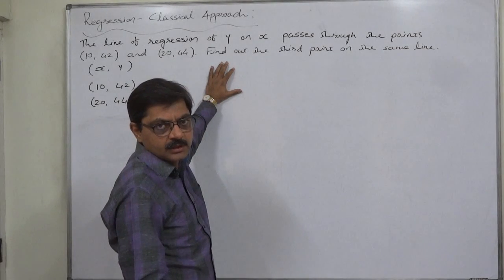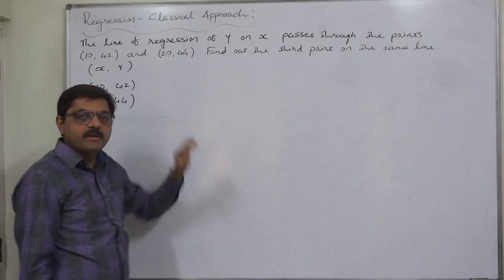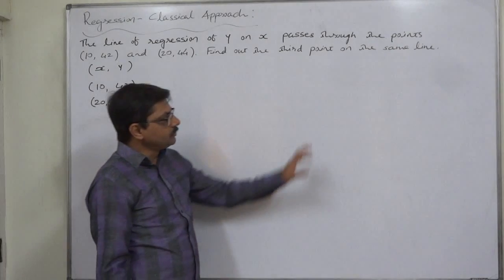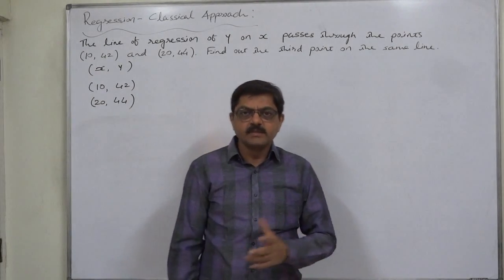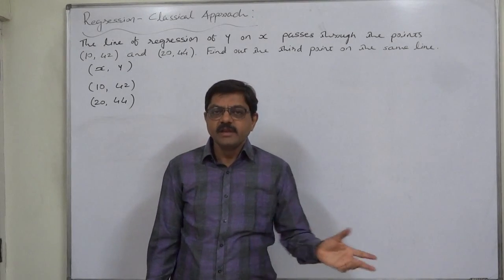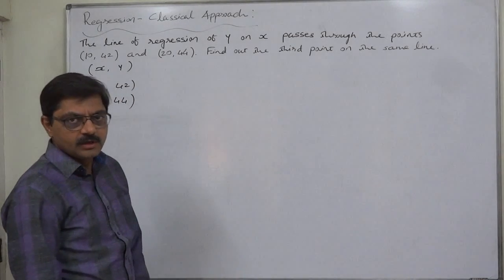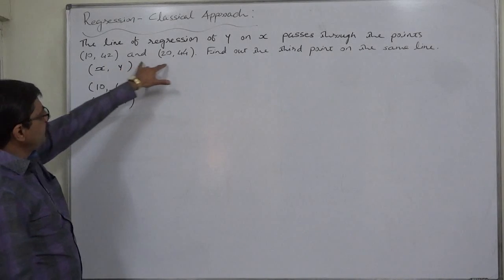To find out the third point mathematically, first we should have the equation of the line of regression. That is not directly available in this question, so first we have to find out the equation of the line of regression of y on x. Then we can substitute the third possible value of x into it and get the estimated value of y, and thus we can have the third point on the same line.